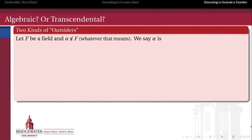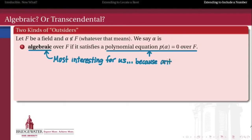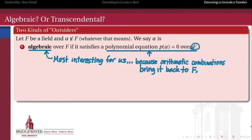So first we have to talk about the kinds of outsiders — the kinds of irrational numbers that exist out in the wild. Let's suppose f is a field and alpha is an element which does not belong to f. That depends on what kind of an outsider alpha is. We're going to say that alpha is an algebraic number over f if it satisfies a polynomial equation with coefficients in f. These are the most interesting examples for us because they have something to do with polynomials. When a number is algebraic over f — when it satisfies a polynomial equation over f — that means we can do arithmetic combinations: raise it to certain powers, multiply it by elements of f, add and subtract those together, and the result ends up landing back in f, even if alpha itself was not.